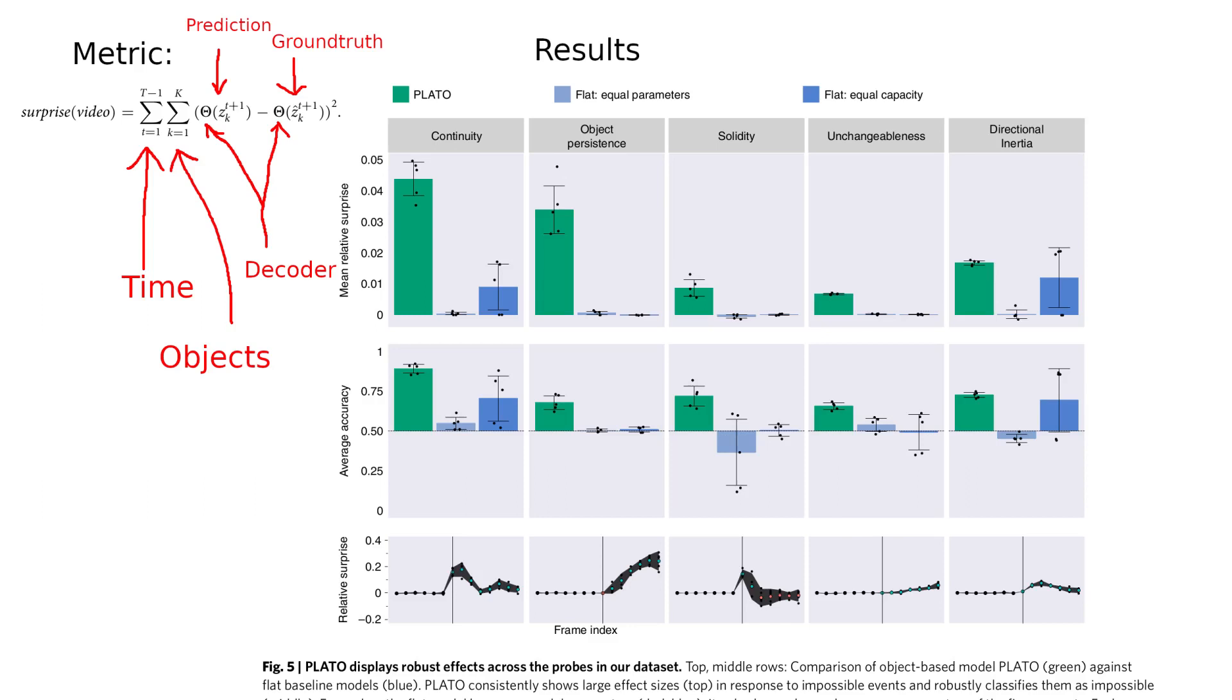Now in the surprise metric, for each time step on each object, they look at the representation that the model created and predicted, and they look at the ground truth representation. And then they compare how much the output of the decoder of these representations differ for each of the objects, each time step.